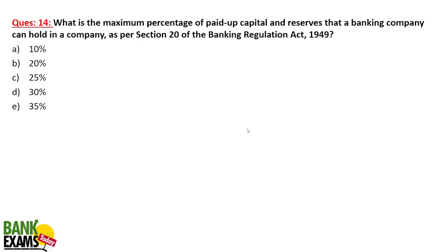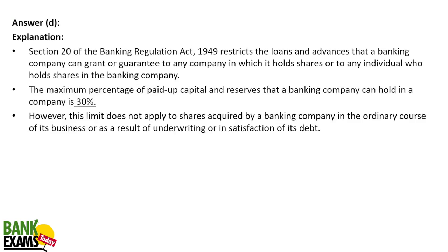What is the maximum percentage of paid-up capital and reserves that a banking company can hold in another company, as per Section 20 of the Banking Regulation Act 1949? The maximum is 30%. A banking company can hold a maximum of 30% of paid-up capital and reserves in any other company.